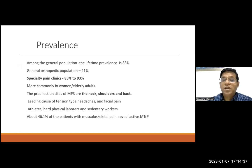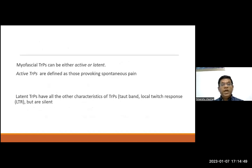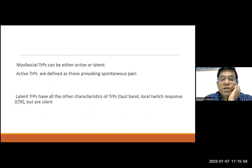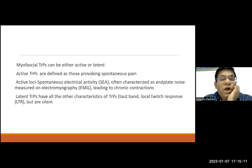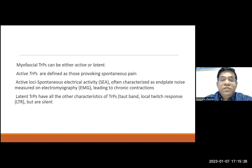Myofascial trigger points can be active or latent. Active trigger points provoke spontaneous pain, whereas latent trigger points have all the characteristics of active trigger points — taut band, local twitch response — but they are silent. Active trigger points also have active loci, which are small spots with abnormal electrical activity due to spontaneous electrical activity in the motor end plates, visible on EMG, which can cause chronic contraction of muscle bundles.